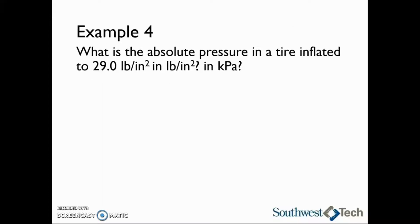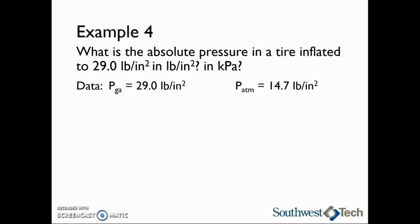Let's take a look at one pressure example. What is the absolute pressure in a tire inflated to 29.0 pounds per square inch, in pounds per square inch, and also in kilopascals? First, let's write down everything we were given. We know that the gauge pressure is 29.0 pounds per square inch. The atmospheric pressure will be 14.7 pounds per square inch, and we are trying to find the absolute pressure.